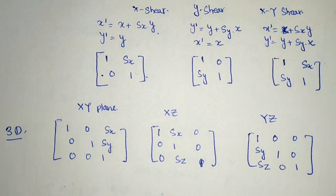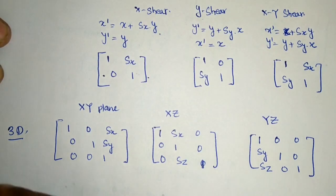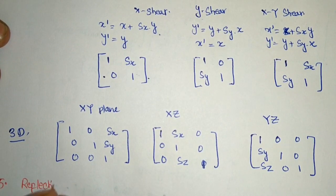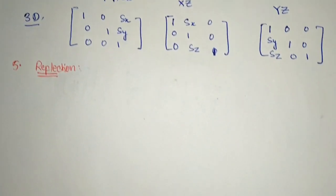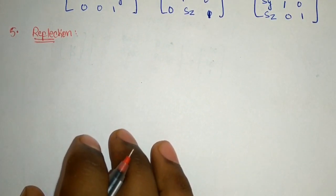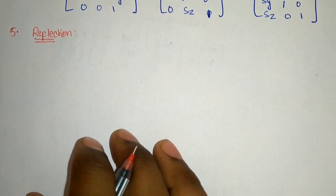So we have talked about translation, rotation, scaling, and shearing. The last transformation is reflection. Reflection is usually asked in gate only and has nothing to do with ESE. We can have reflection of a point about any axis, any plane, or any independent line.